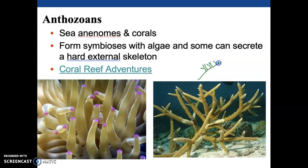The bottom part of the polyp is where they secrete calcium and build up this calcium structure. The top part is living tissue — that's where they produce energy and grab food. That's the gastrovascular cavity, the polyp body up above. They grab stuff out of the water column and eat it. They're sessile filter feeders — omnivores grabbing anything floating through the water column, kind of like sponges.